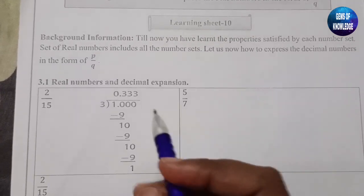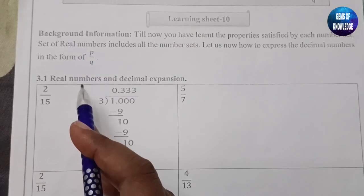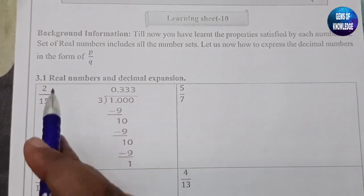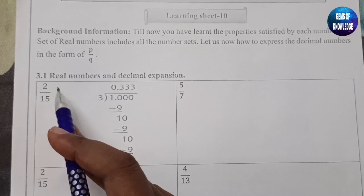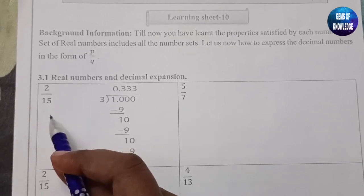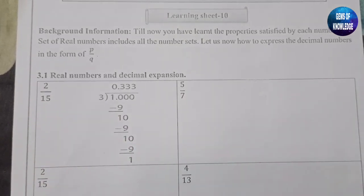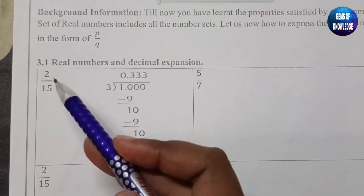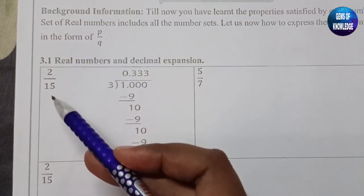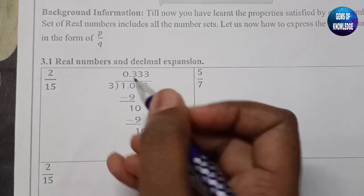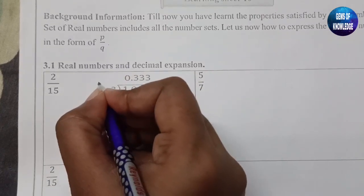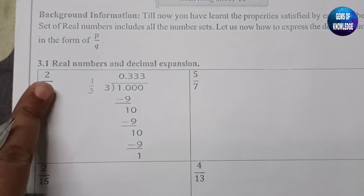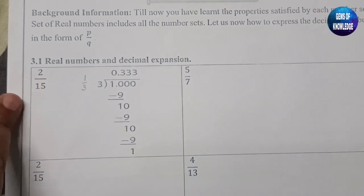The question here is real numbers and decimal expansion. The first one is done for you — 2 by 15. But you can see they have also solved the question for 1 by 3, so I think the question is actually 1 divided by 3, because the question appears repeated two times.